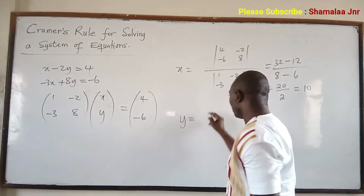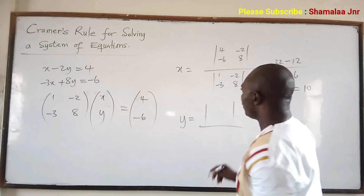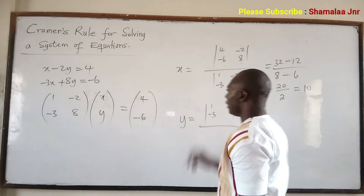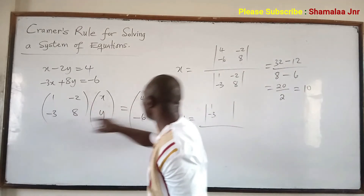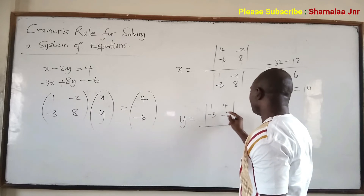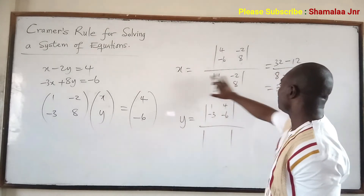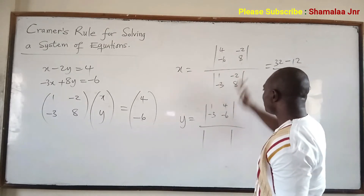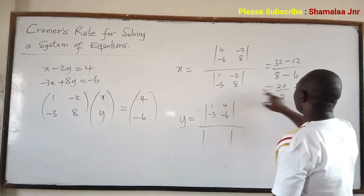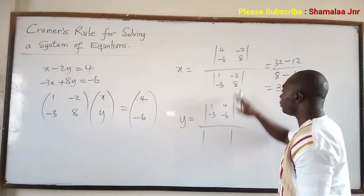Now if you want the value of y: because you want y, you maintain the x-column as 1, negative 3, and replace the y-column with the right-hand side values 4, negative 6. Divide by the original matrix determinant. That denominator is the same value — 2 — so you don't have to redo that work. You can just write the denominator as 2.